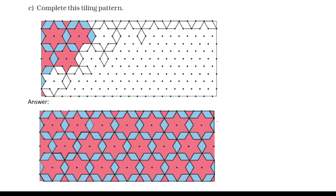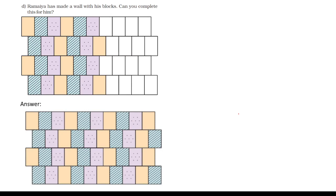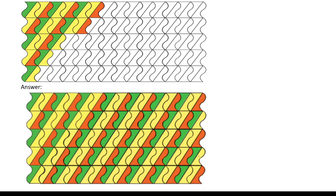Again we have a tiling pattern — draw it in your book. Here, Ramaya has made a wall with his blocks; complete the design for him — the completed block design is shown. Moving to the next page: Renu has begun to paint a wall — help her to complete it. Complete this wall and draw it in your book. With this we come to an end — I hope these question answers are clear to you. Thank you, have a nice day.